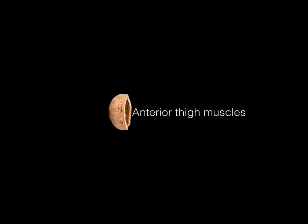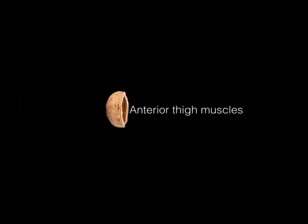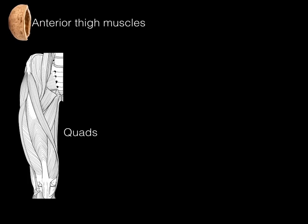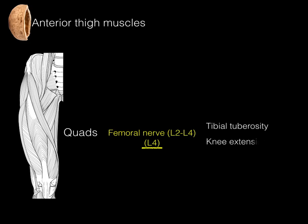Anterior thigh muscles in a nutshell: the four quadriceps muscles are all innervated by the femoral nerve with an emphasis on the L4 level. These four quads insert on the tibial tuberosity — that bump in front of the tibia — and all perform knee extension.